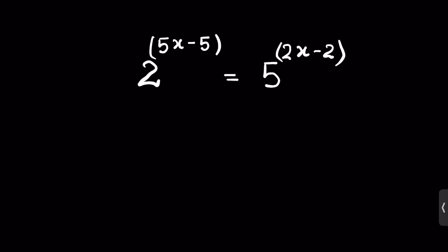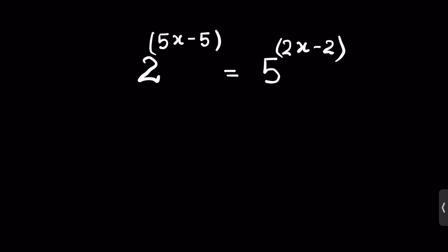2 raised to the power 5x minus 5 is equal to 5 raised to the power 2x minus 2. We have to find the value of x.